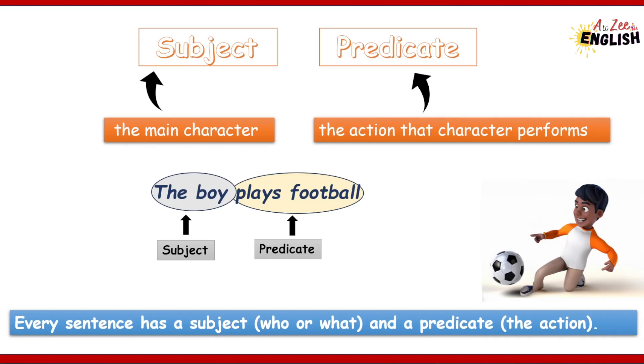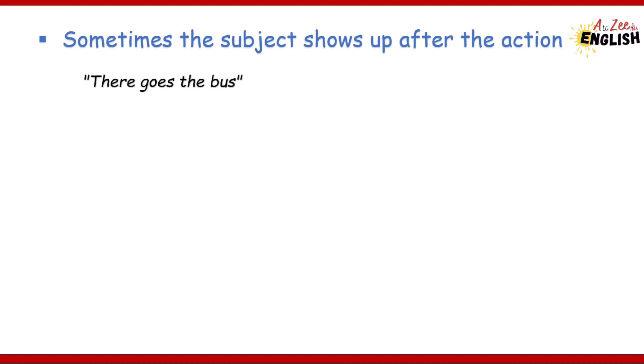Sometimes the subject shows up after the action. For example, in these sentences: 'There goes the bus,' 'Here comes the train.' In these examples, the subject - the bus and the train - comes after the action - goes and comes.